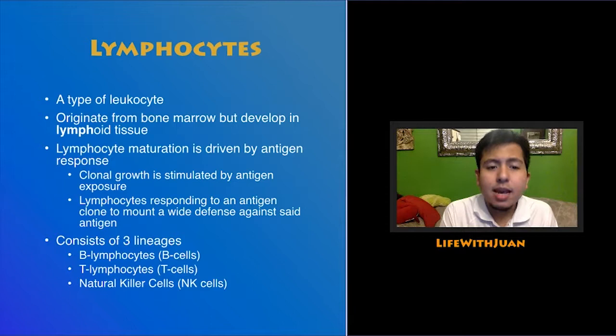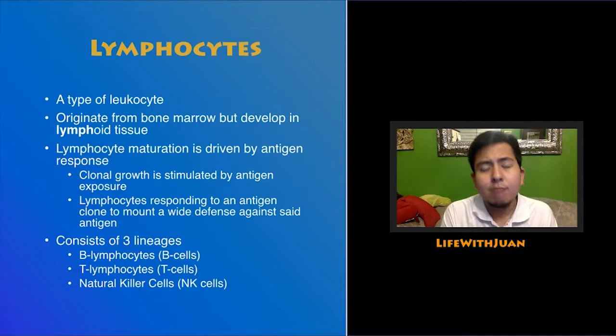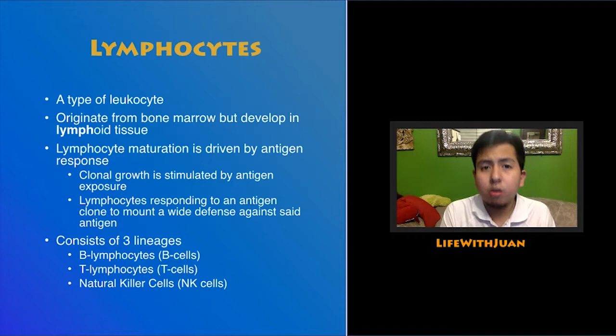These are a type of white blood cell that originate from bone marrow, but as their name suggests, they develop in lymphoid tissue. Their maturation is driven by antigen response or by exposure to antigens. Antigens are protein patterns displayed by bacteria, viruses, or even rogue self-cells that will drive a lymphocytic response. Once a lymphocyte is stimulated, these will undergo clonal growth — multiplying several times over so they can mount a sufficient defense against the source of that antigen.